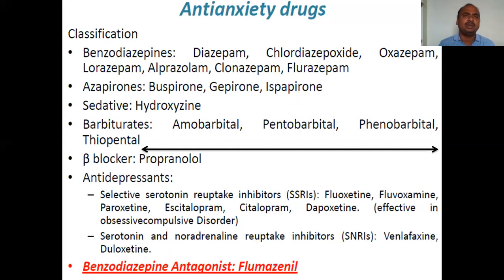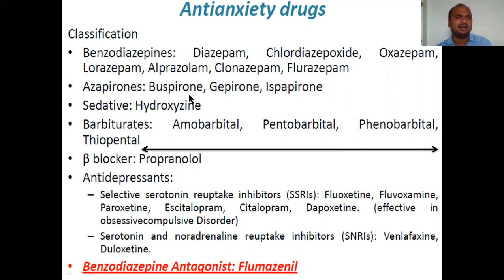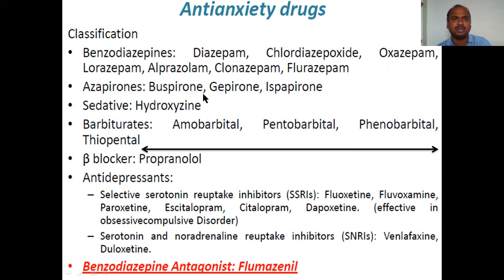Classification is very important. Anti-anxiety drugs include: benzodiazepines, which are very popular; barbiturates such as phenobarbital, pentobarbital, and thiopental; azapirones, which means buspirone — wherever you see the suffix '-pirone' (P-I-R-O-N-E), that is azapirones; and sedatives such as hydroxyzine, which is also covered in hypnotics and sedatives. These are the four main important anxiolytic drug classes.